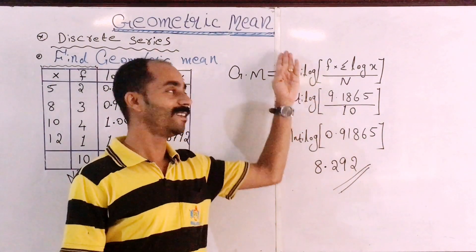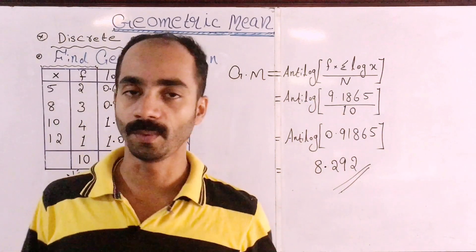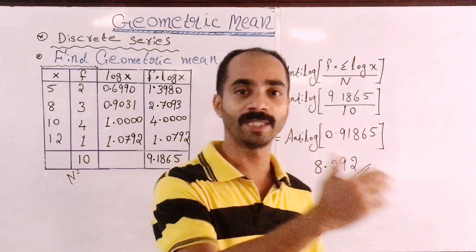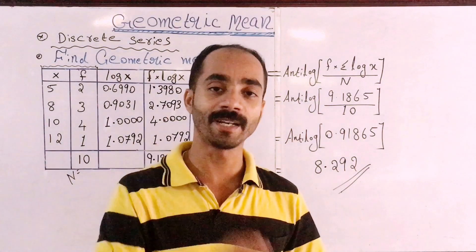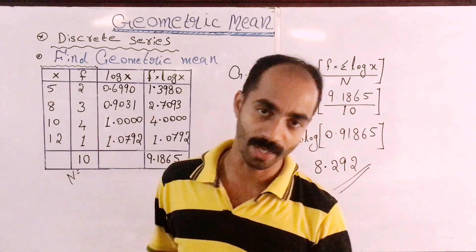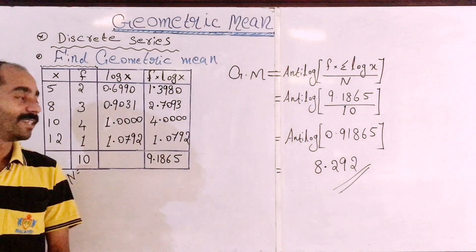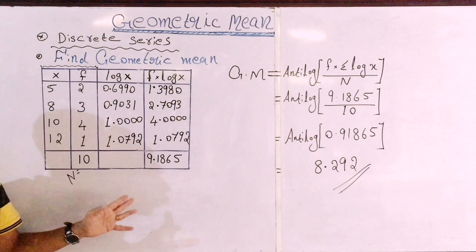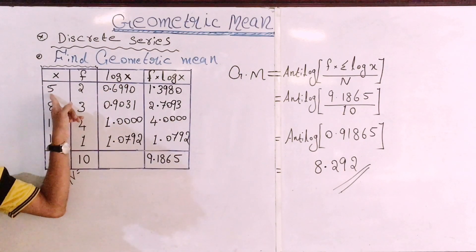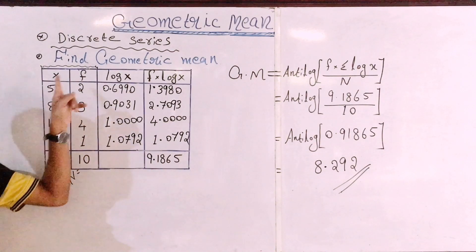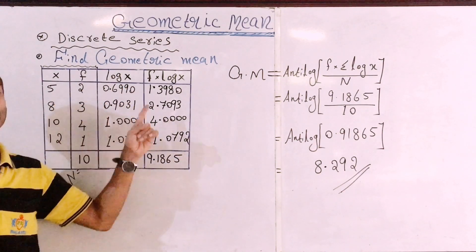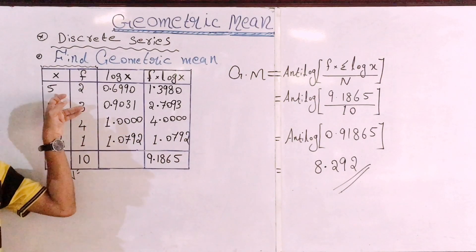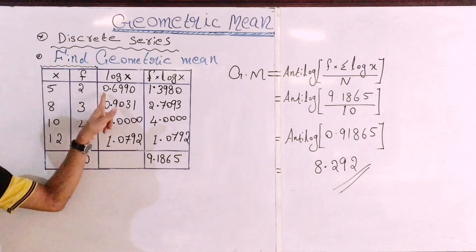We need to find log X for each value. Log X for value 5 is 0.6990. The number of 1-digit values is 0, meaning 0 point — so 8 gives 1 digit, 0 point.